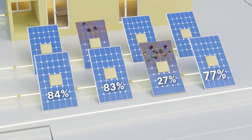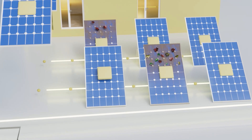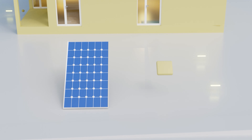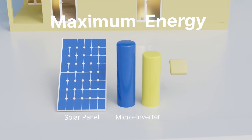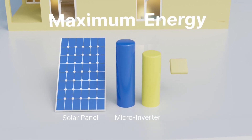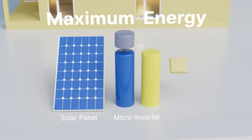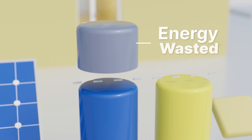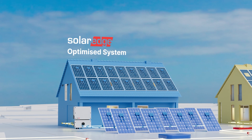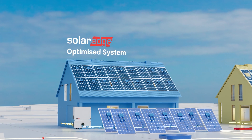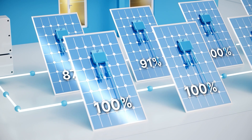However, micro inverters have certain limitations. Most panels today can produce more energy than the strongest micro inverter can handle, leading again to energy waste. With a SolarEdge DC optimized system that uses power optimizers,